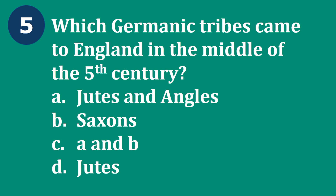Question 5: Which Germanic tribes came to England in the middle of the 5th century? A. Jutes and Angles, B. Saxons, C. A and B, D. Jutes. The correct answer is C — A and B. The three Germanic tribes called Jutes, Angles, and Saxons came to England in the middle of the 5th century.